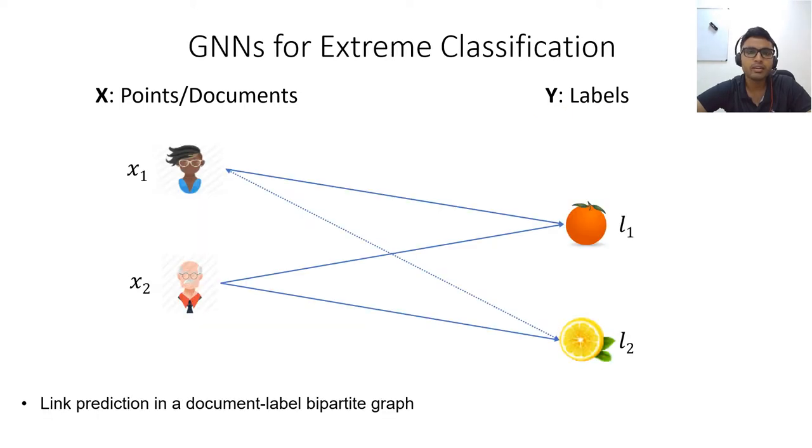From another perspective, extreme classification can be seen as a link prediction problem in a bipartite graph between documents and labels. This interpretation allows rich correlation structures to be inferred. For instance, suppose the documents X1 and X2 share a common label L1. If there is another label L2 which is linked to X2, it can be inferred that L2 might be relevant to document X1 as well.